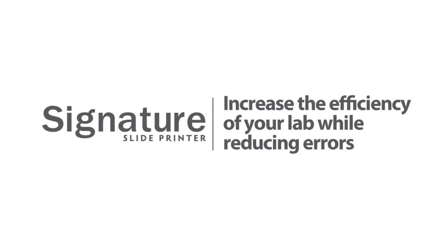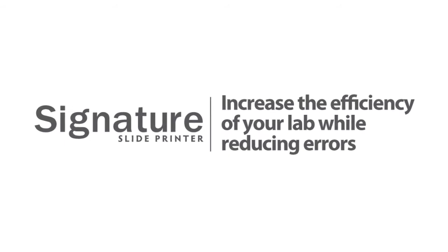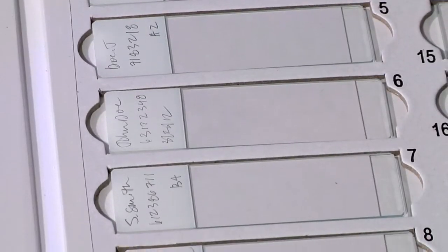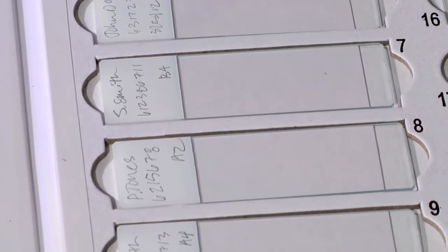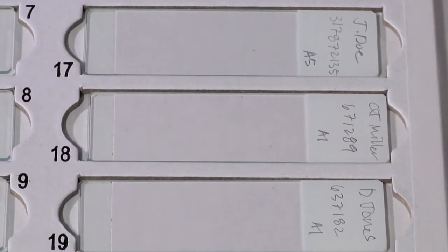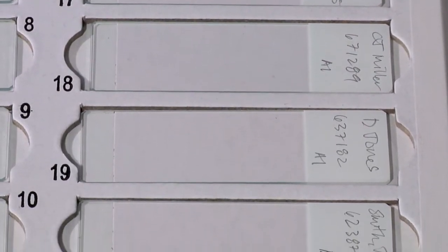Signature Slide Printer: Increase the efficiency of your lab while reducing errors. Proper specimen identification is a critical task, however handwriting is sometimes difficult to read. Paper labels can fall off or be put on incorrectly and cause automated equipment to fail. Now there's a better way.